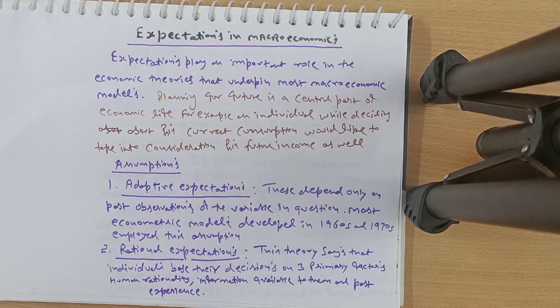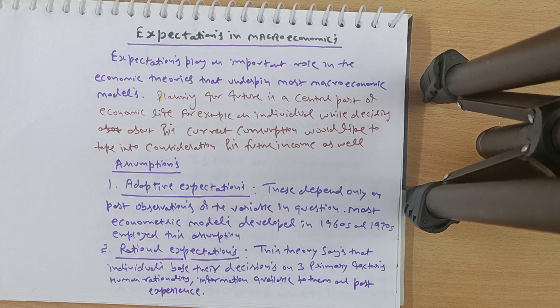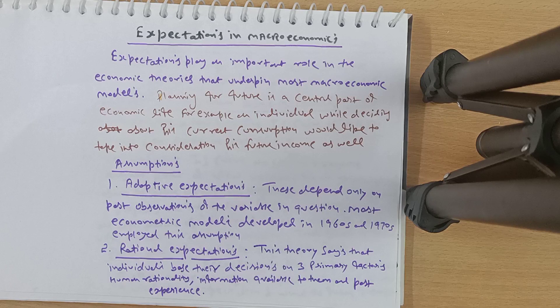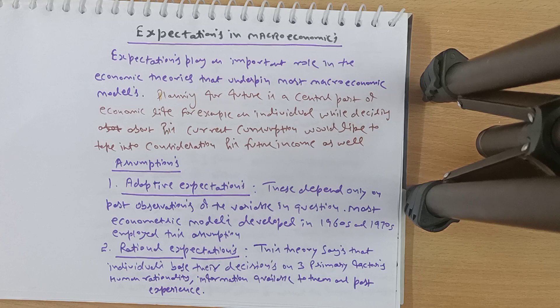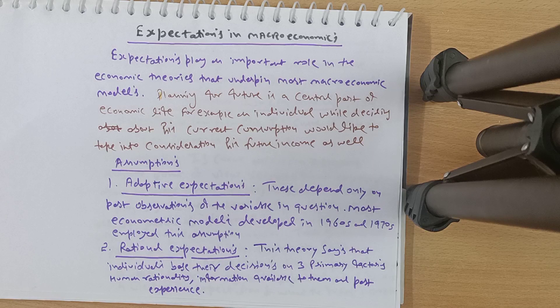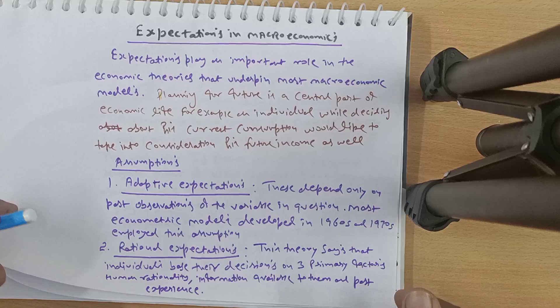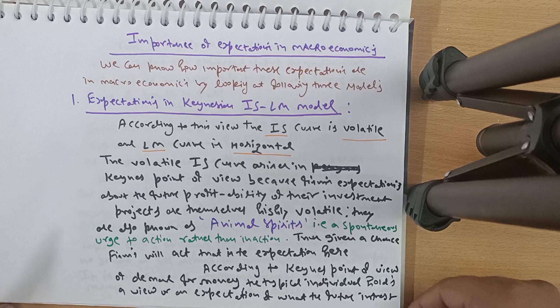There are two main assumptions: adaptive expectations and rational expectations, which we will deal with in detail later. Adaptive expectations depend only on past observations of the variable in question. Most econometric models developed in the 1960s and 70s employed this assumption. Rational expectation theory says that individuals base their decisions on three factors: human rationality, information available to them, and past experience.